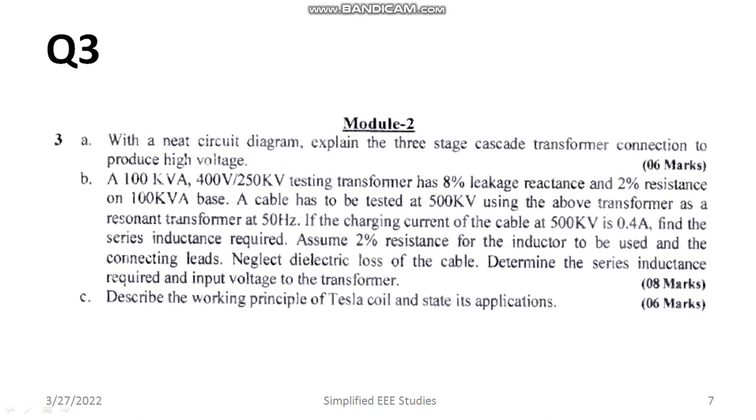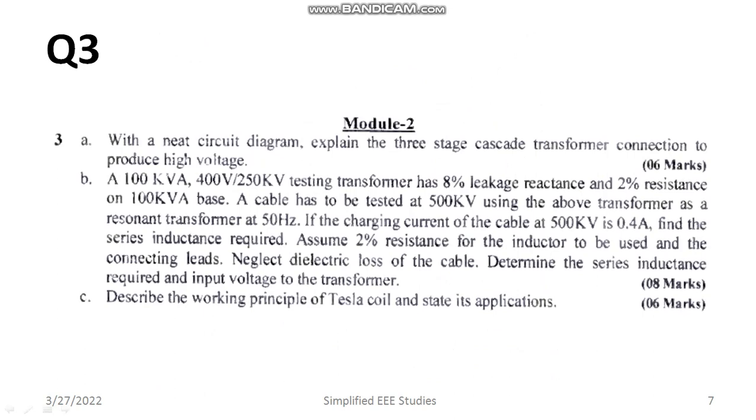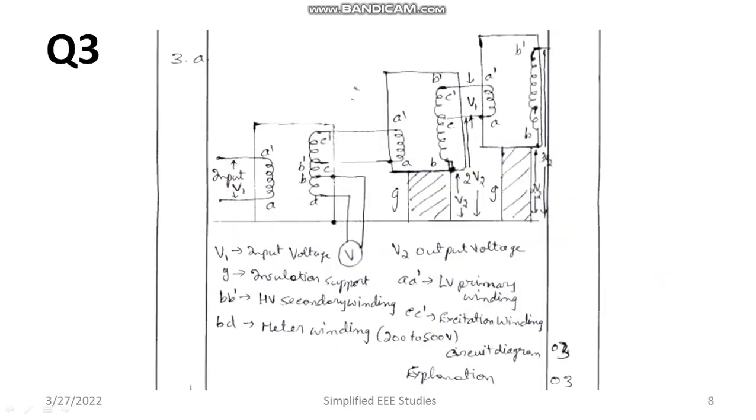Question number 3: With the neat diagram explain the cascaded connections of transformer. Diagram and specification has three marks credit. Explanation another three marks.